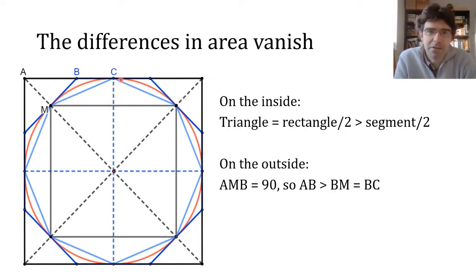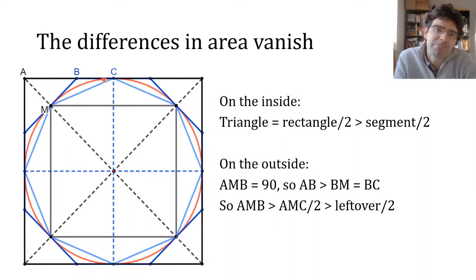M, B is the same as B, C, because the tangents from B to the circle have to be both the same length. So triangle A, M, B is going to be more than half of triangle A, M, C, and that is more than half of this leftover area between the outer square and the circle.